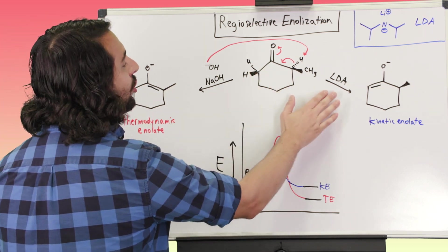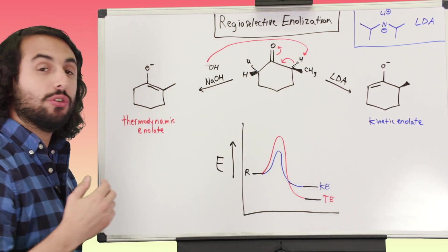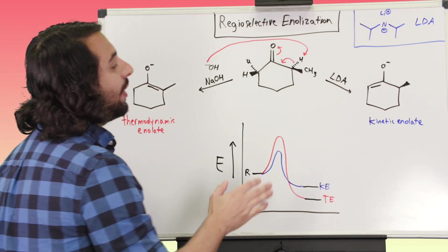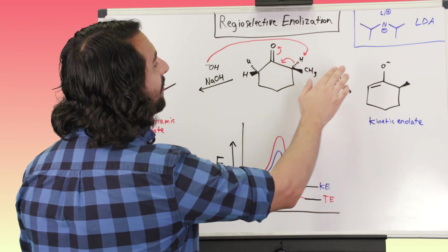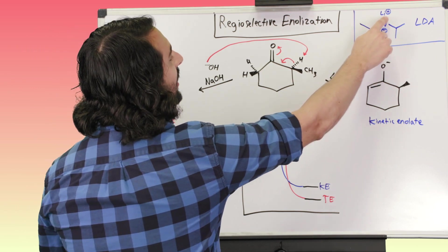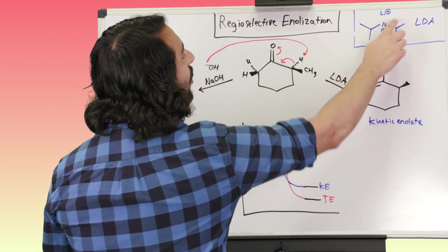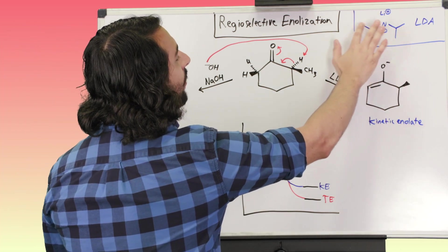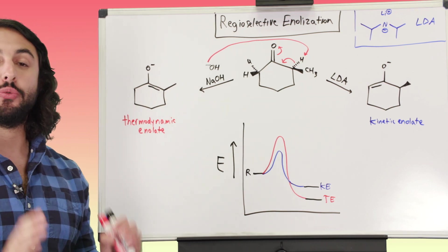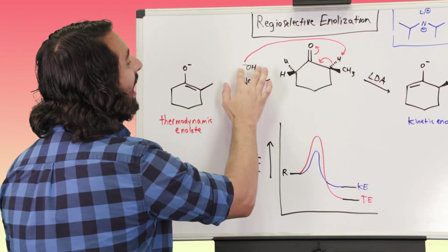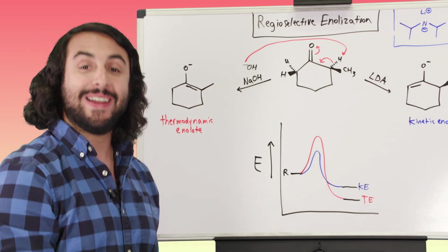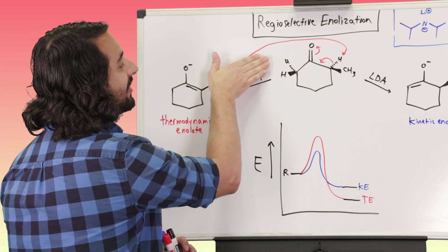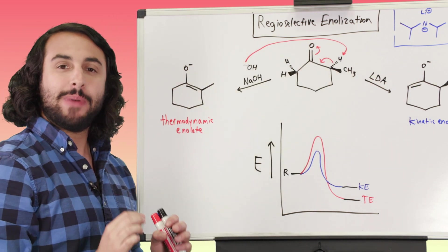Now looking at the other side, this is an opportunity to introduce a very bulky base that is great for enolization when we want to go the other direction — that's LDA, lithium diisopropylamide. Here is the lithium counter ion and the two isopropyl groups — that's what LDA looks like. We can see it's very sterically hindered. Whereas hydroxide was very sterically unhindered, making the discrepancy in activation energy from either side pretty much negligible...